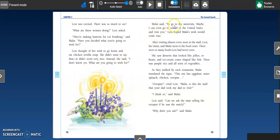Malay said to go to the university. That was her wish, right? Lexi says, I don't know yet. What are you going to wish for? Malay said to go to the university. Maybe I can even go to school in the United States and visit you. Lexi hoped Malay's wish would come true.